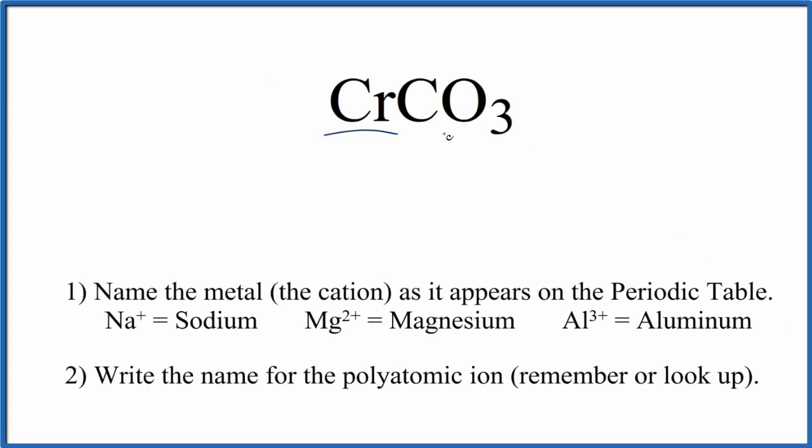To write the name for CrCO3, we need to recognize that chromium is a transition metal, and this CO3 here is a polyatomic ion. So because we have this transition metal and this polyatomic ion, a group of nonmetals, we're going to treat this as an ionic compound.